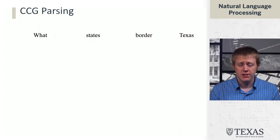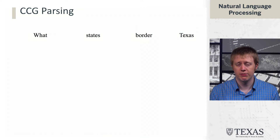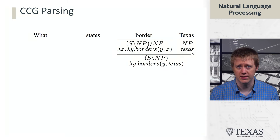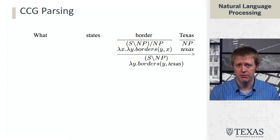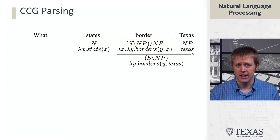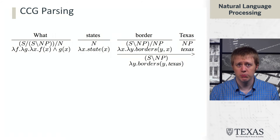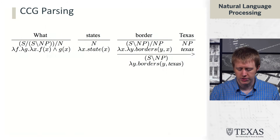The reason we want to do this is because, given a question like 'what states border Texas,' this is going to allow us to form a lambda calculus representation from the sentence. 'Border' is again this S back NP forward NP. And 'states' we have here as just a bare noun — a function we can think of as a filter that requires that things passing the filter be states. And then 'what' is going to be a bit of a monstrosity here.